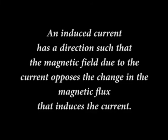Lenz's Law: soon after Faraday proposed his law of induction, Heinrich Friedrich Lenz devised a rule for determining the direction of an induced current in a loop. An induced current has a direction such that the magnetic field due to the current opposes the change in the magnetic flux that induces the current. This means that the induced current tends to keep the original magnetic flux through the loop from changing. Furthermore, the direction of an induced EMF is that of the induced current. The key word in Lenz's Law is opposition.